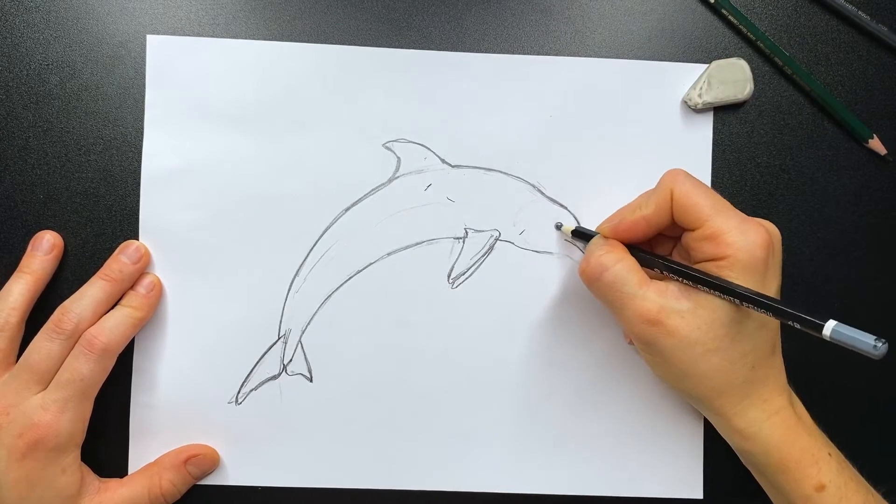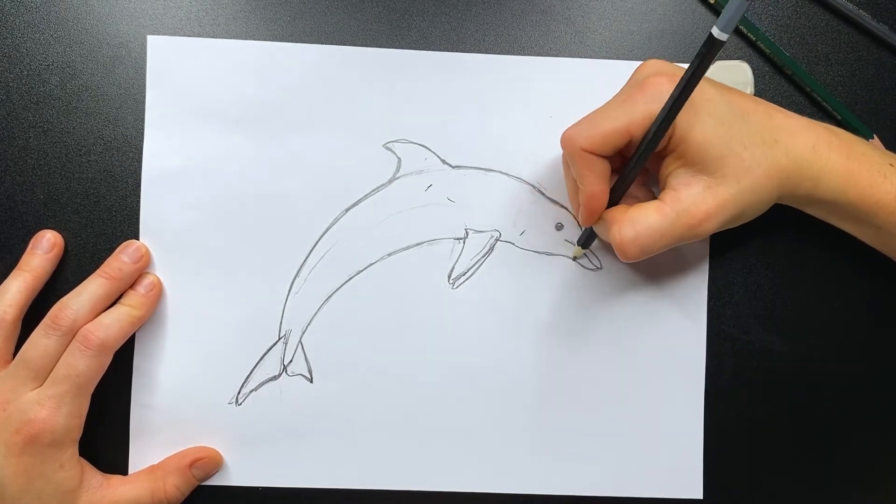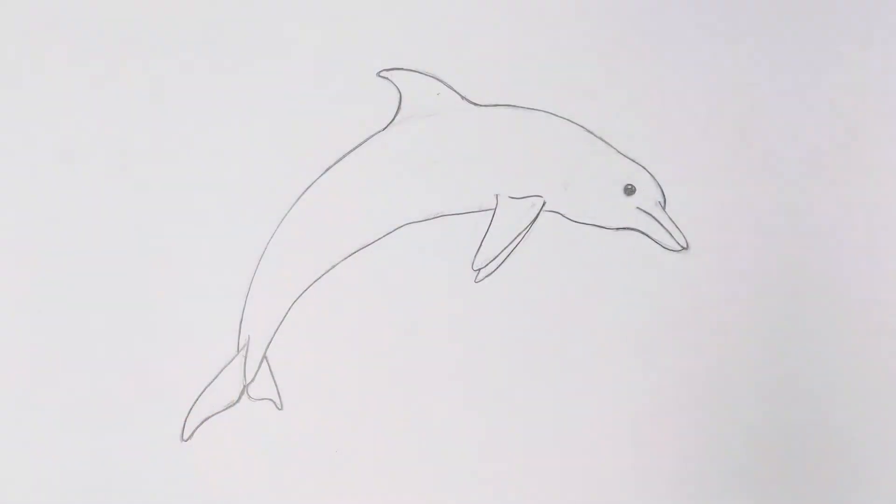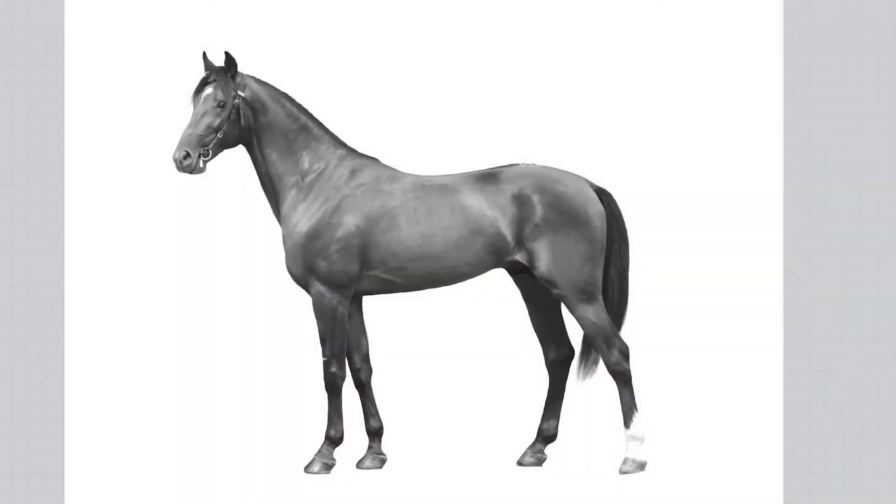At the end, clean up your drawing using eraser and your final drawing of a dolphin would look something like this. Now let's try drawing a horse together. This is definitely the hardest animal we are drawing today.